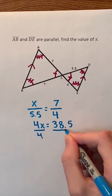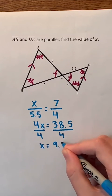Lastly, we can divide both sides of the equation by 4 to see that X is equal to 9.625.